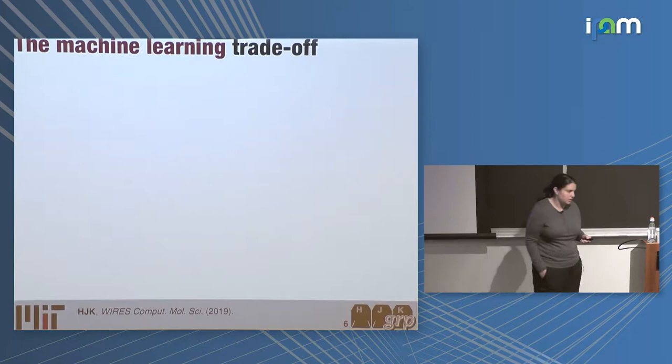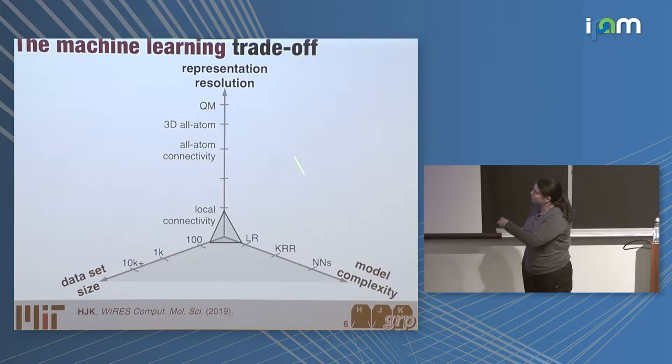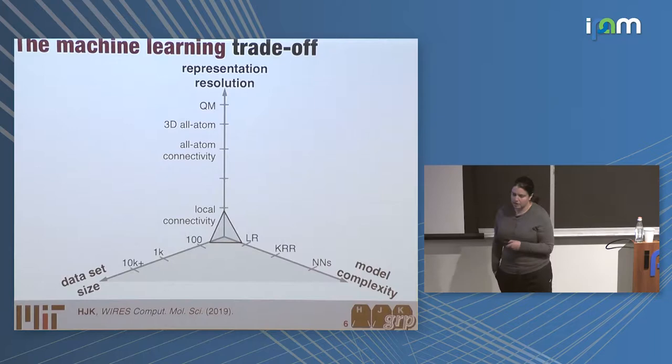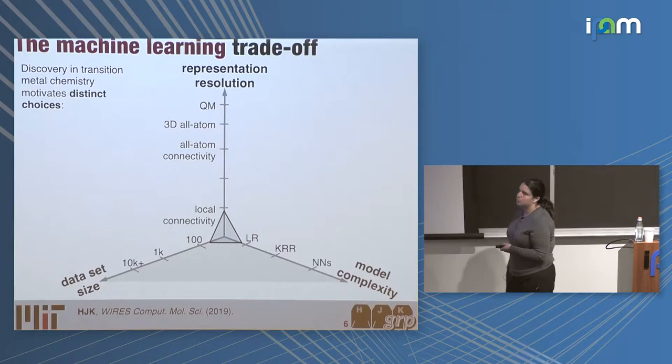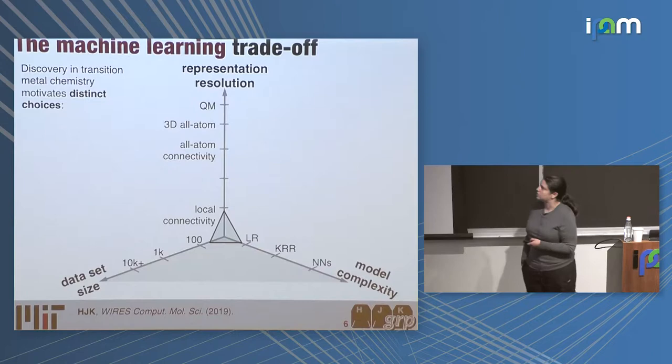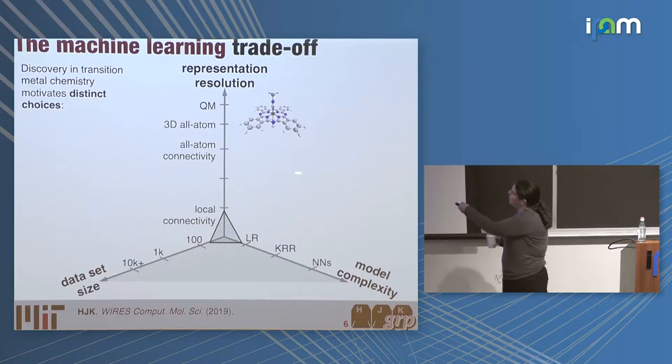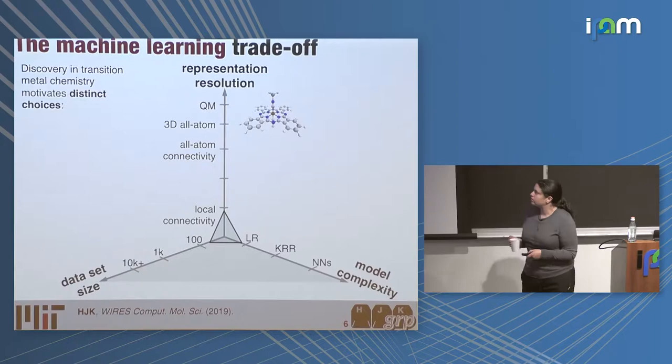The debate has been brought up about whether there is actually a tradeoff between model complexity and interpretability. My feeling is there's no right answer to any of these, but there are constraints, and the optimal solution is sensitive to those constraints. What we wanted to do was build models that could accelerate discovery in open-shell transition metal chemistry. The distinct choices we were motivated to make were about how we're going to represent our transition metal complex to a machine learning model — and could that representation aid interpretability? I'll spend most of my talk telling you a little bit about how we did that.